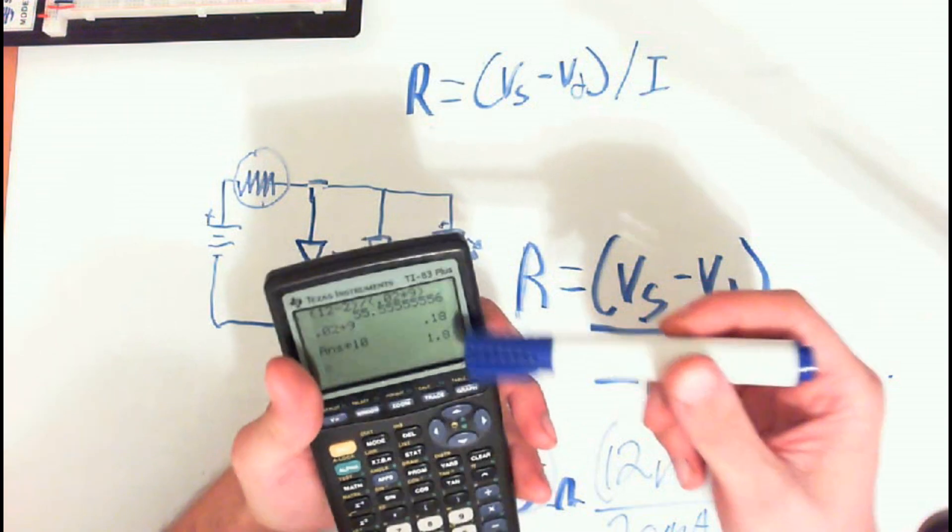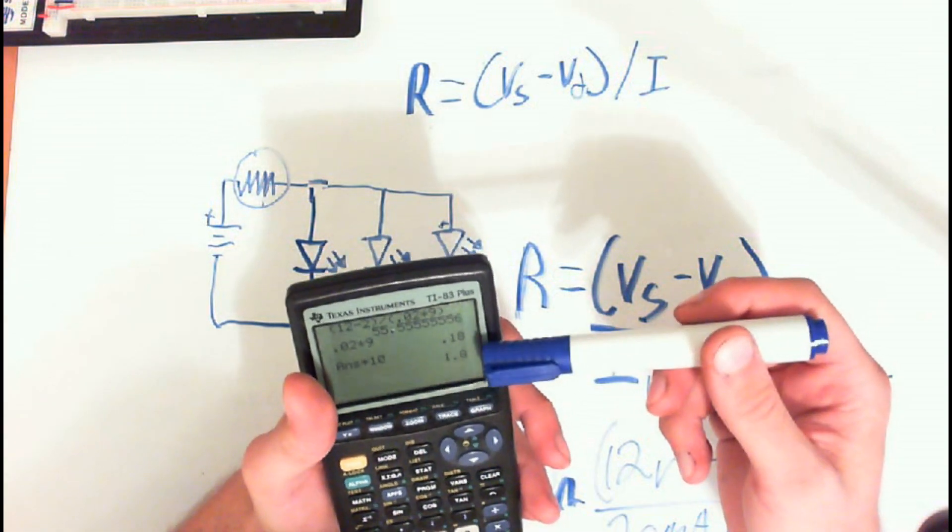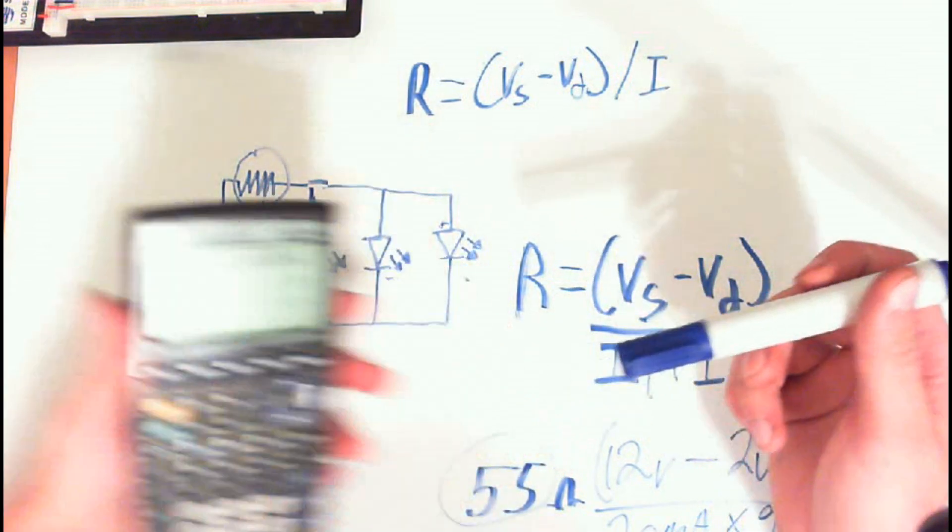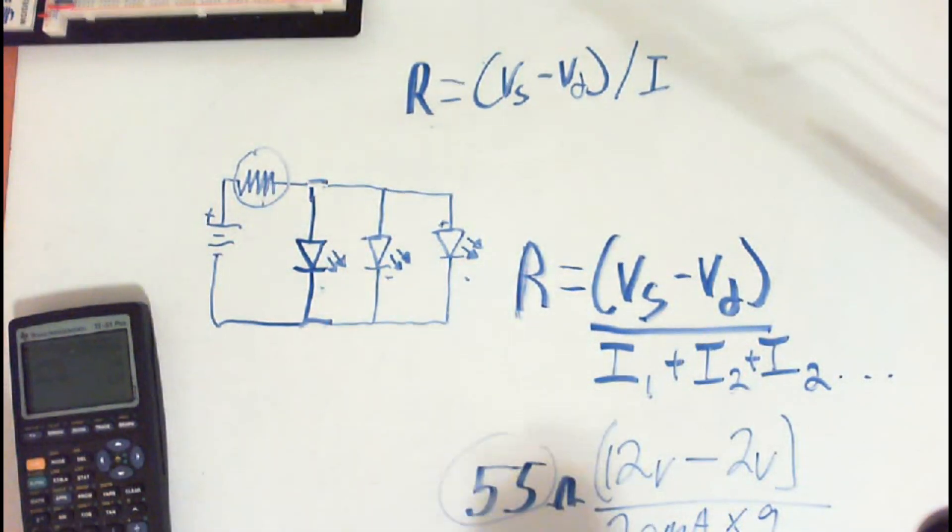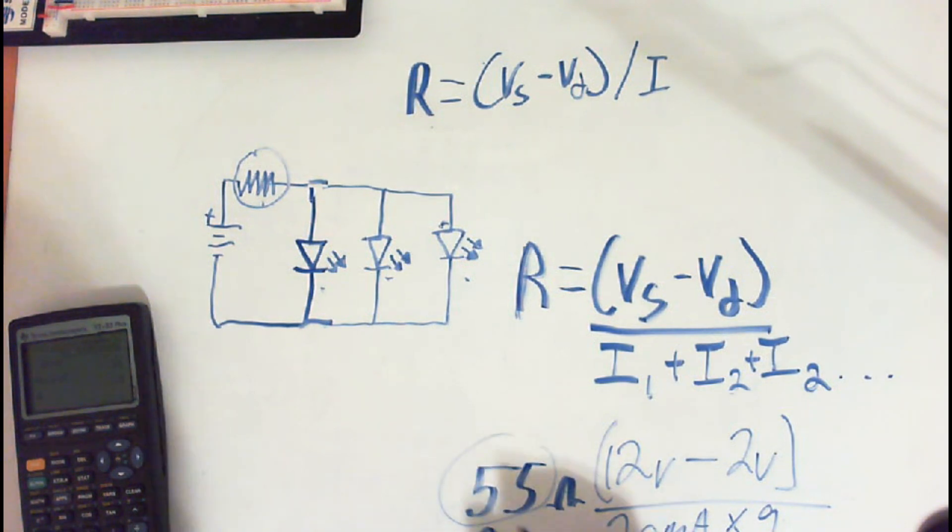And of course they don't make 1.8, so you would need to go up to a 2 watt, or even higher. The higher, the better. So we would need a 2 watt, 55 ohm resistor.